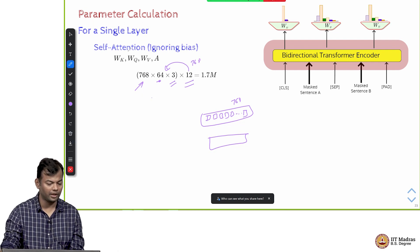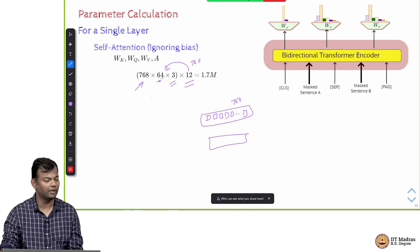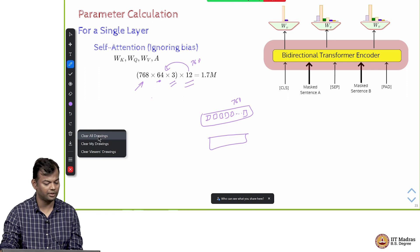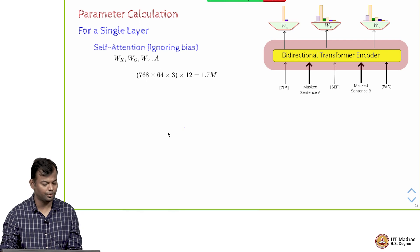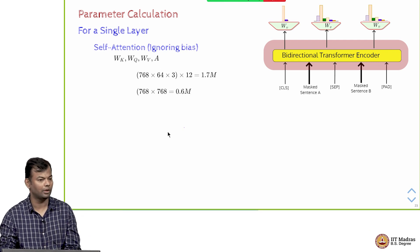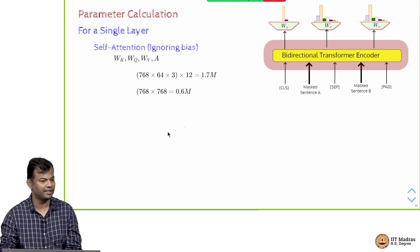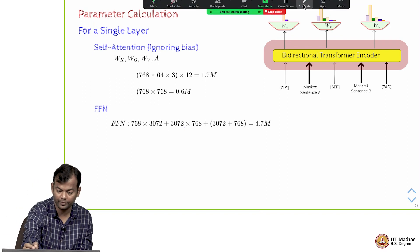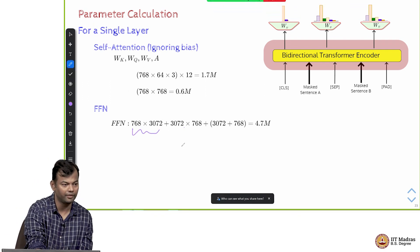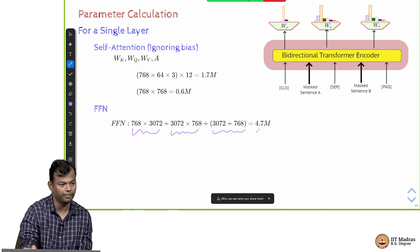Each of these is going to be 768 × 64, because it is going to take a 768 dimensional vector and convert it to a 64 dimensional vector, and there are 3 such matrices. That is how the calculation is done. This is the w_o, so we also have the w_o matrix. Once you concatenate you have the linear layer, so the linear layer is 768 × 768, so that is 0.6 million. In the feed forward network, it takes a 768 dimensional vector, converts it to 3072, then 3072 gets converted back to 768, and then you have the biases.